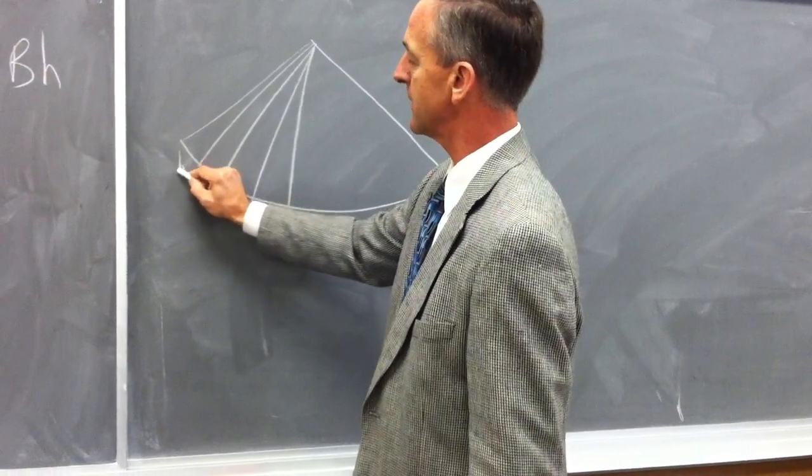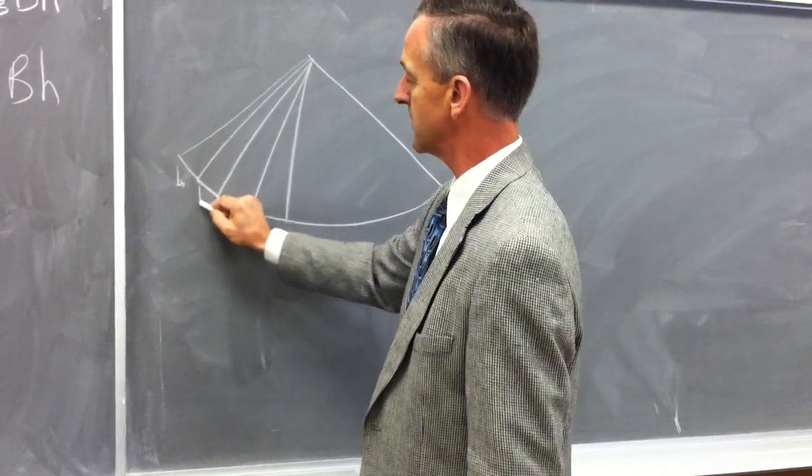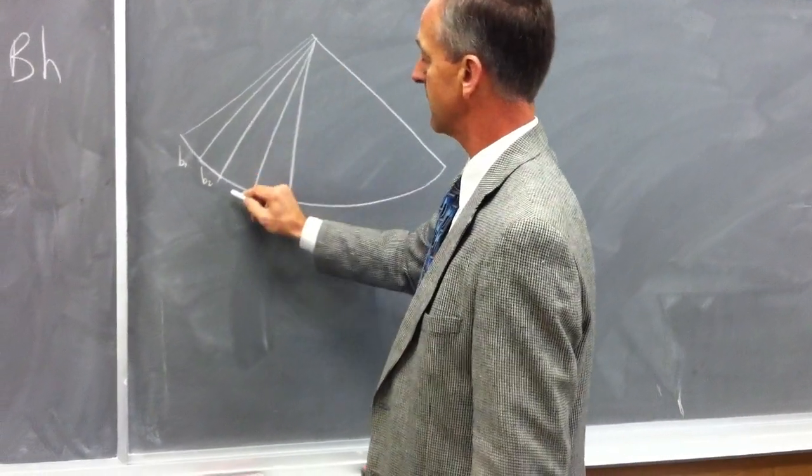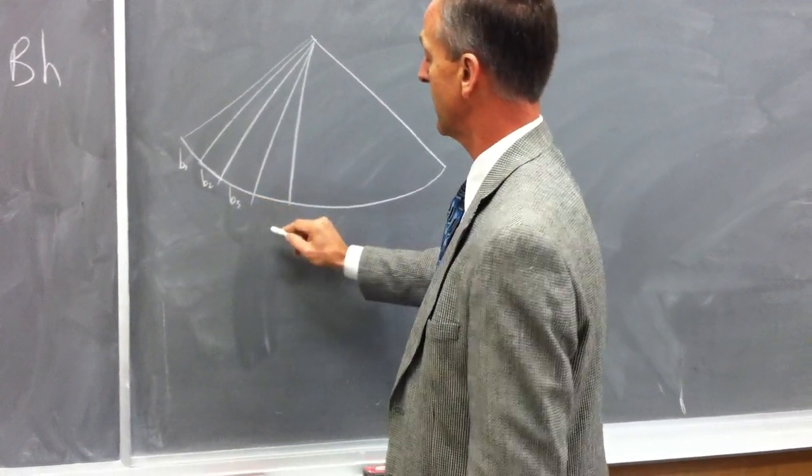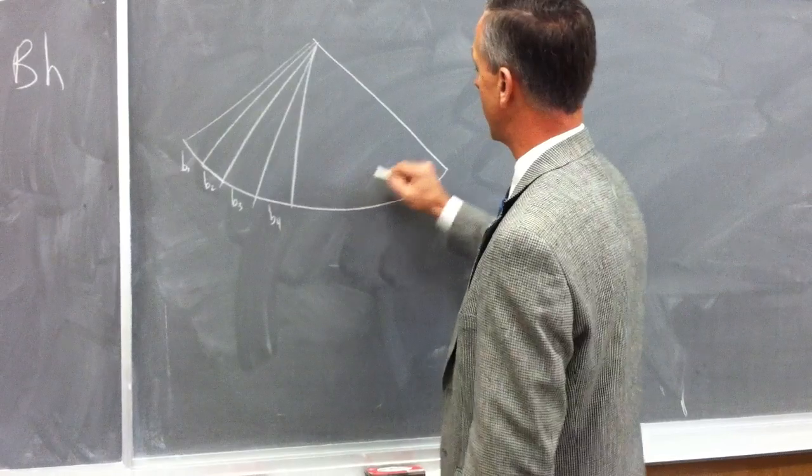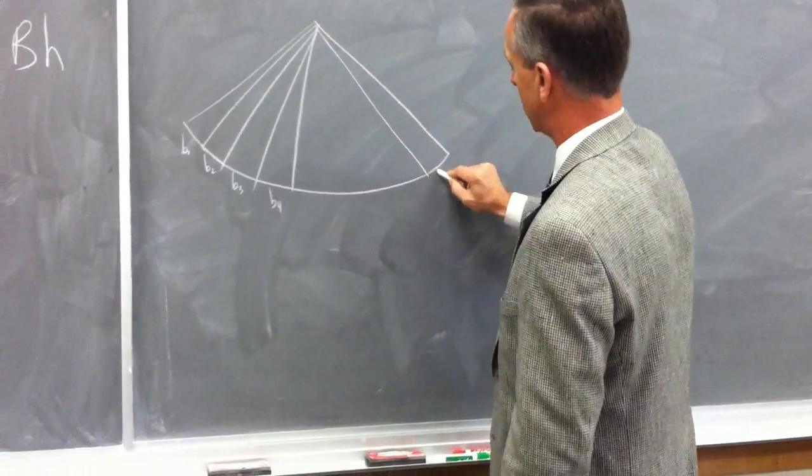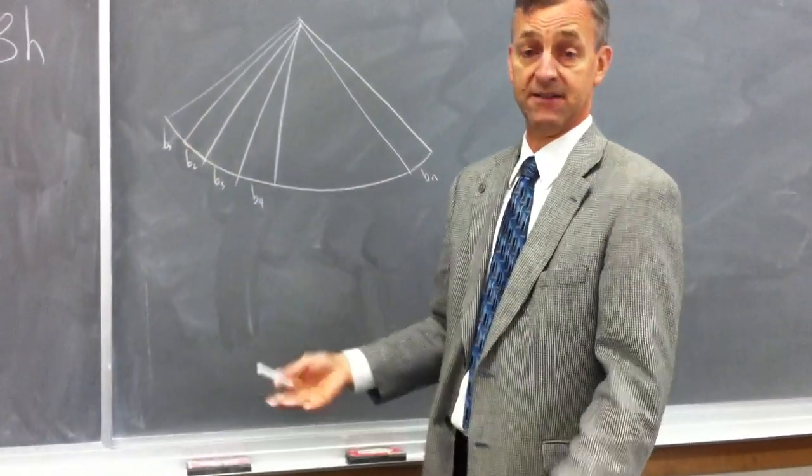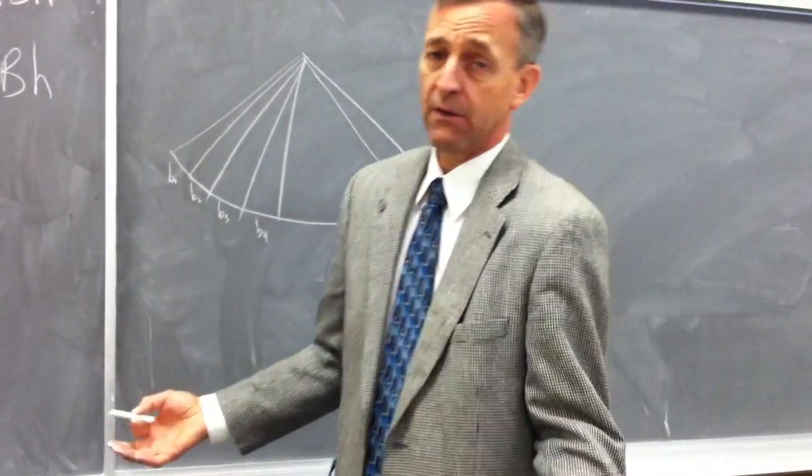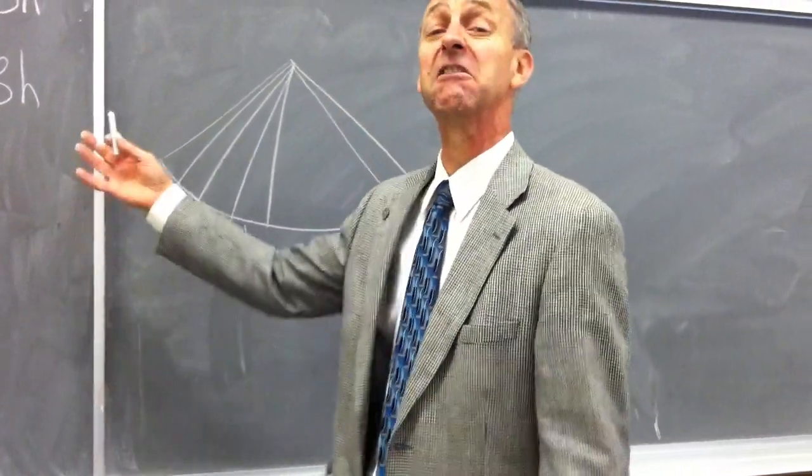Let's say that the base of this one is b sub 1, the length of the base of this one is b sub 2, the length of this one is b sub 3, b sub 4, all the way over to b sub n. And we could divide it into 10, a hundred, a thousand, or an infinity.